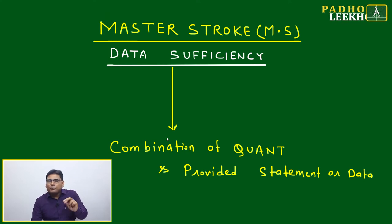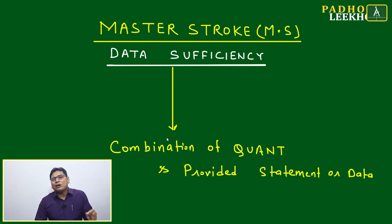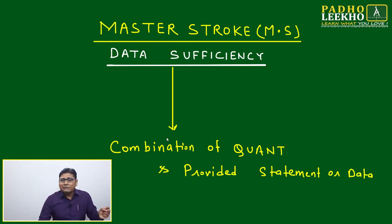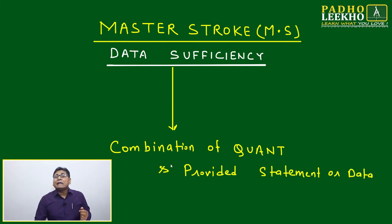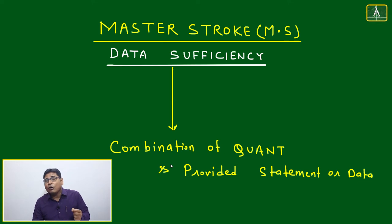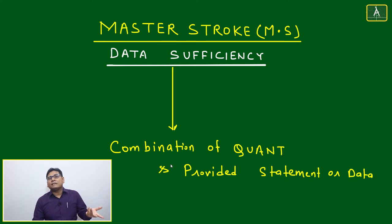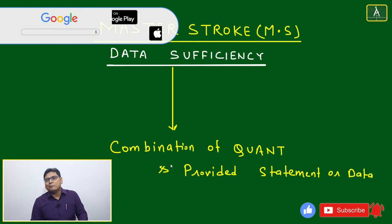Data sufficiency has some peculiarity compared to other types of questions. Here, it is not always necessary that you should get the exact solution. The main thing is: whatever question is given, and based on the question whatever statement or data is given — is the question solvable or not? That is our prime target. Many times you can take advantage because even if you cannot get the solution, if you can check whether it is solvable or not, you will get the marks.